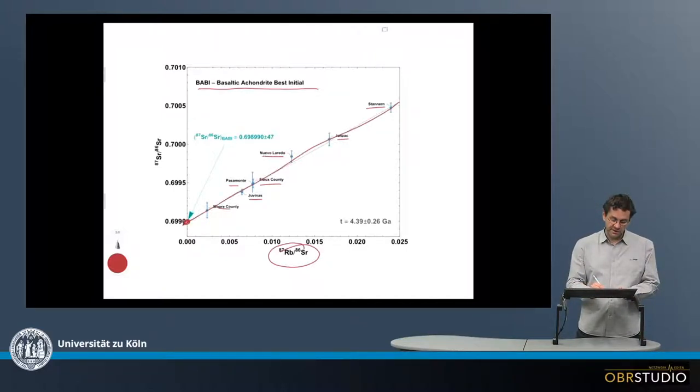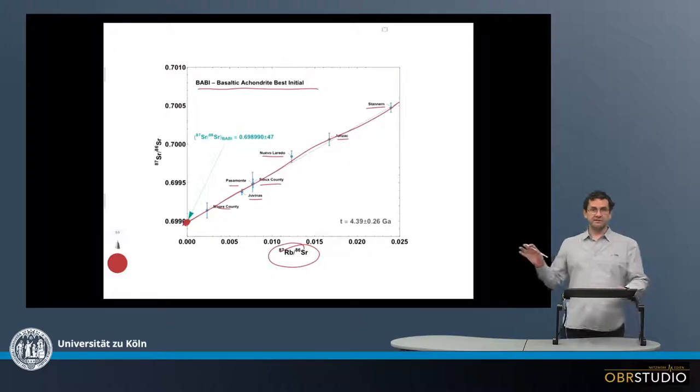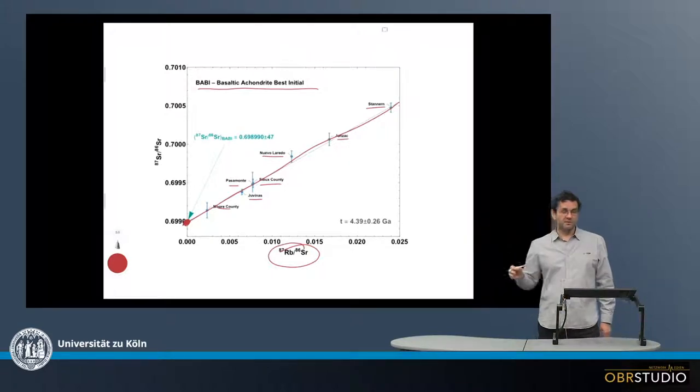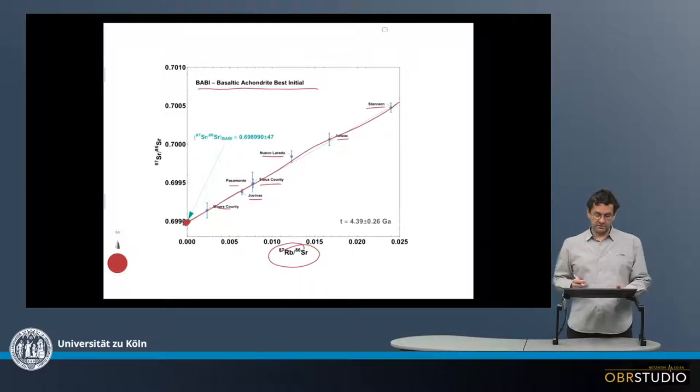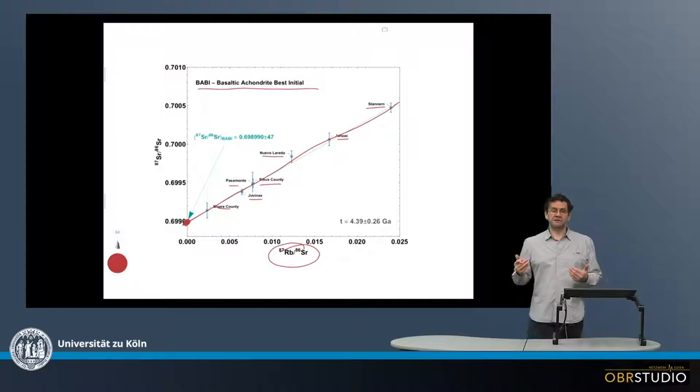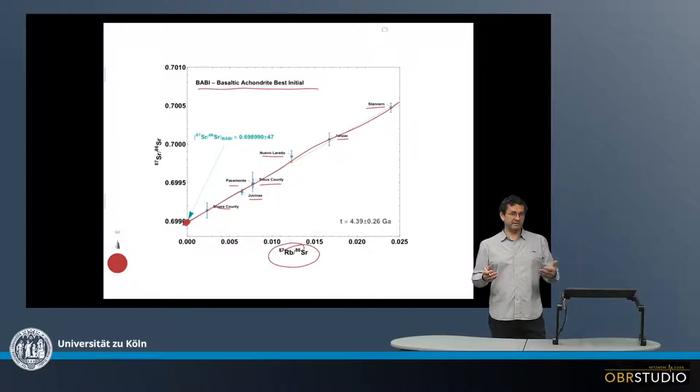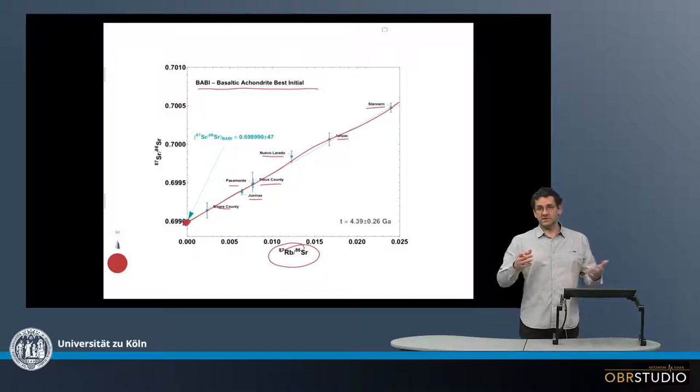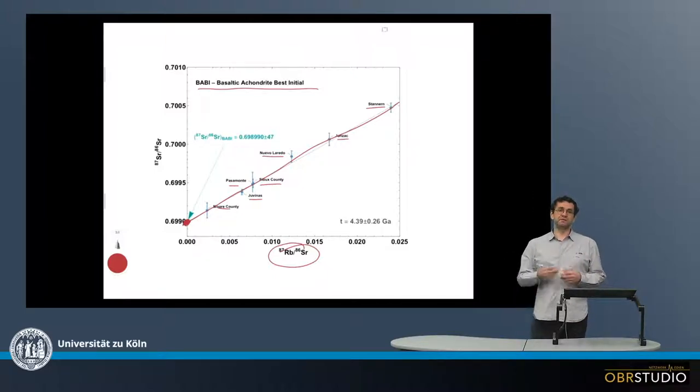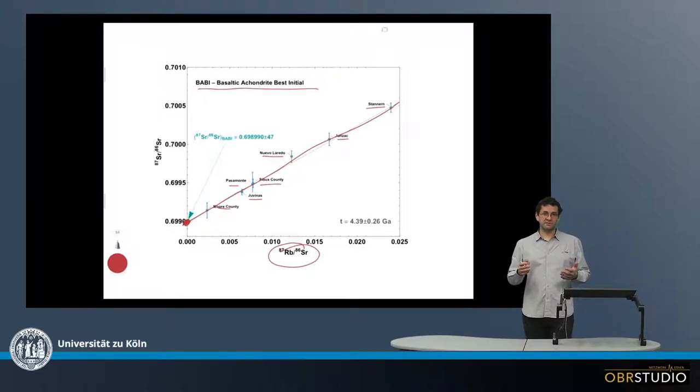and this isochron has a y-axis intercept. And this intercept is, as shown before, the initial value for the rubidium-strontium system, or more precisely for the 87-strontium-86-strontium ratio here.